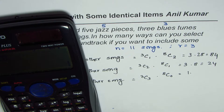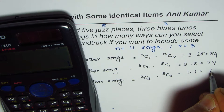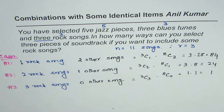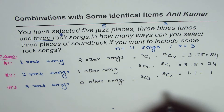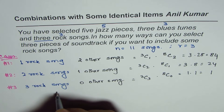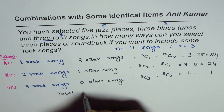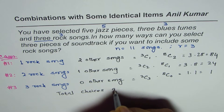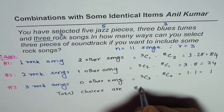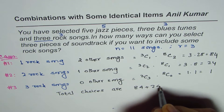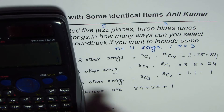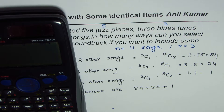And 8C0 is also 1, so that is 1. Combining them, the total number of choices is 84 plus 24 plus 1.